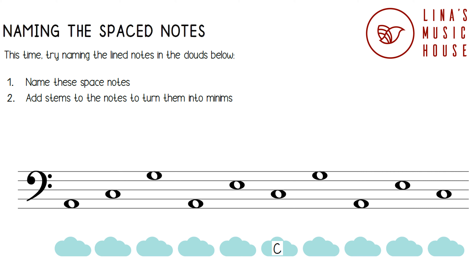The next note is in the fourth space. The fourth word in All Cows Eat Grass is Grass, so this is a G note. The next note: the third word is Eat, so this is an E note. The second last note is in the third space. The third word is Eat, so this is an E note.